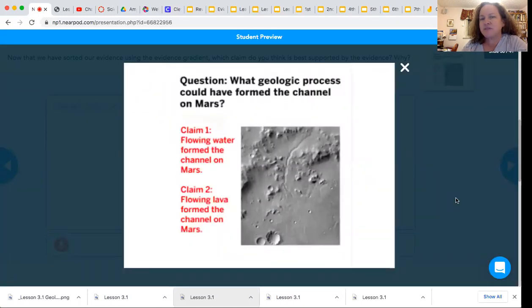Do you think the evidence supports that flowing water formed the channel on Mars, or that flowing lava formed the channel on Mars, and why? Really look and think about the evidence gradient and which pieces of evidence you felt were more convincing. You looked at both of them.